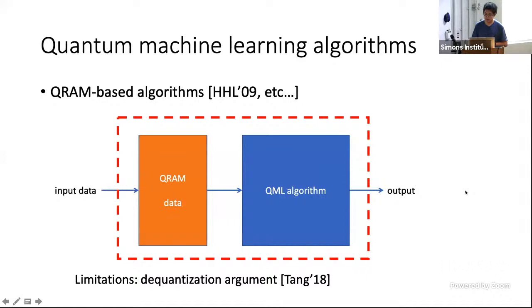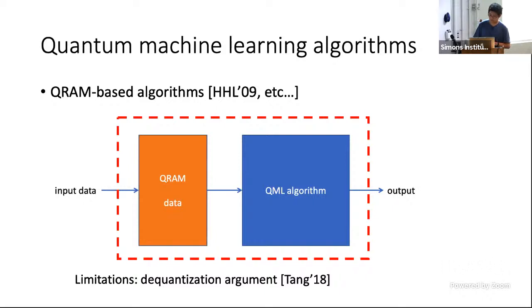The third limitation is the existence of dequantization arguments, developed by Yuen Tang. The argument is that in order to have a fair comparison between classical and quantum machine learning algorithms, since we are allowing quantum machine learning algorithms to use QRAM, we should also allow classical algorithms to use QRAM as well, which basically means we are giving classical algorithms additional sampling access to data. In this case, it was shown that for some problems, classical machine learning algorithms can also achieve a polylog n running time, which dequantizes the exponential quantum speedup.